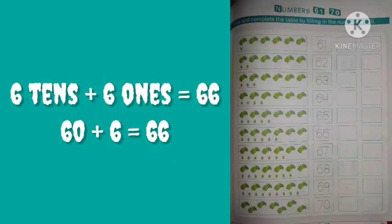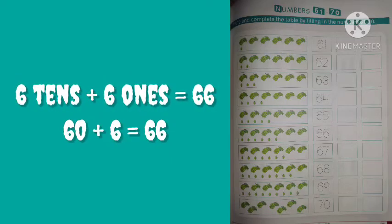In the next box, 6 tens and 6 ones is equal to 66. 60 plus 6 is equal to 66.